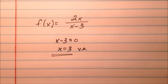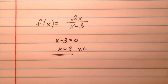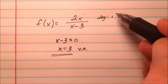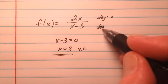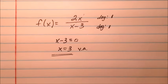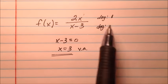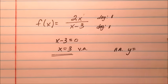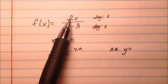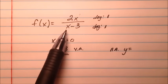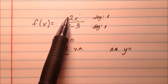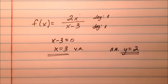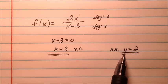For horizontal asymptotes, we look at the degree of the numerator and the degree of the denominator. The degree of the numerator is 1, and the degree of the denominator is also 1. When the degrees are the same, the horizontal asymptote is y equals the ratio of the leading coefficients — that's 2 over 1, which is 2. So we have a vertical asymptote at x equals 3 and a horizontal asymptote at y equals 2.